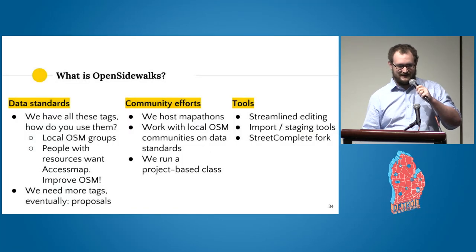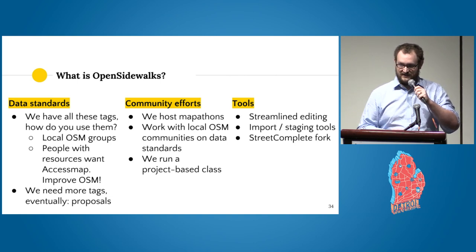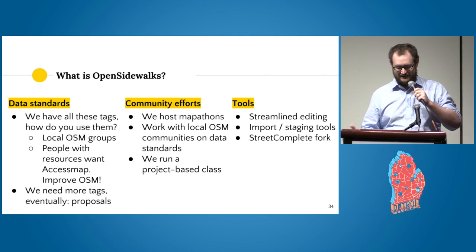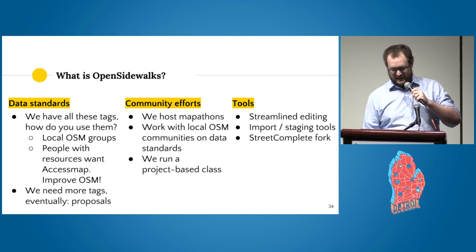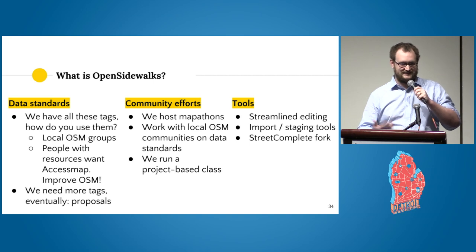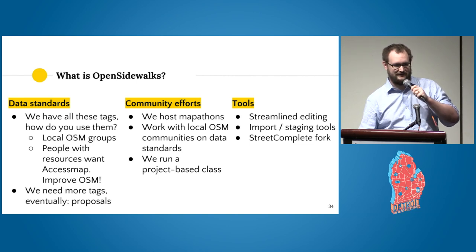Open Sidewalks is an overarching project that tries to organize different efforts. One effort is data standards — we didn't come up with most of the tags, but we try to provide resources for someone asking 'how do I map this sidewalk area?' since there's very little available to know for sure how to go into OSM and start adding pedestrian information. We work with local OSM groups and agencies and nonprofits that want to map this information to get them involved with OSM so that data is public. We also host mapathons, run a class developing tooling, and have created our own tools for streamlined editing, tasking, and imports.